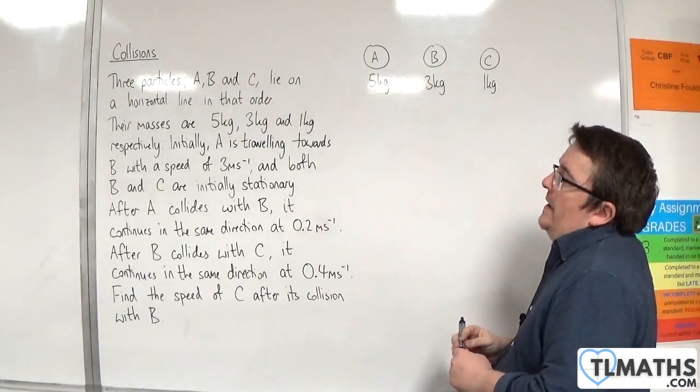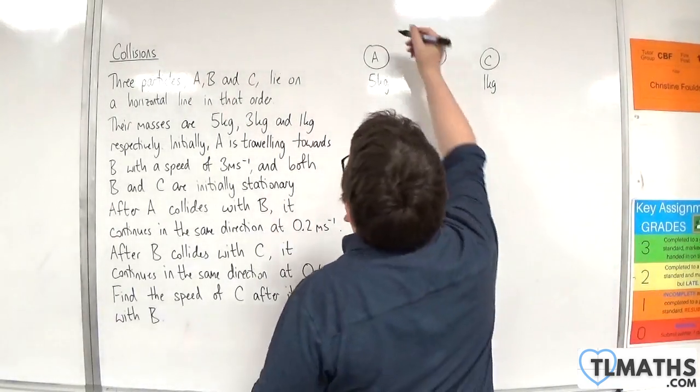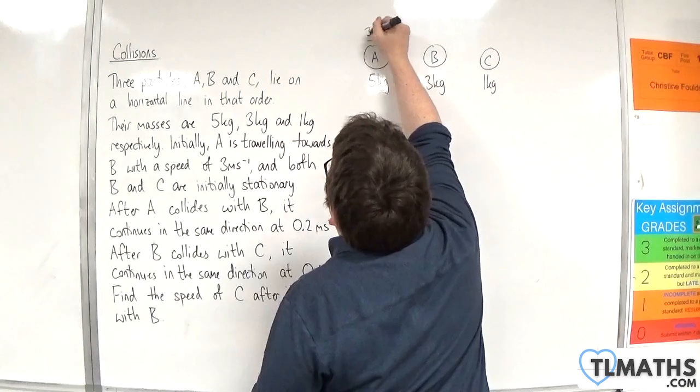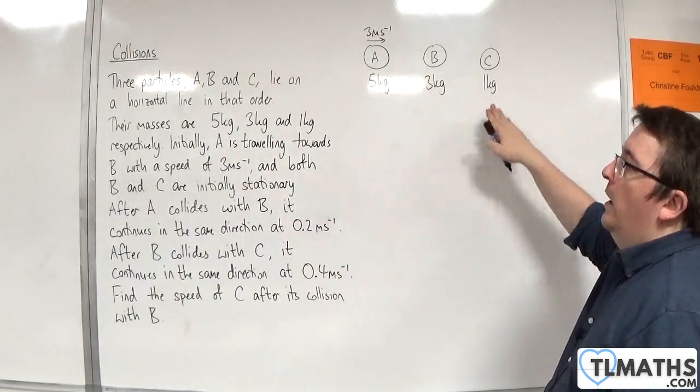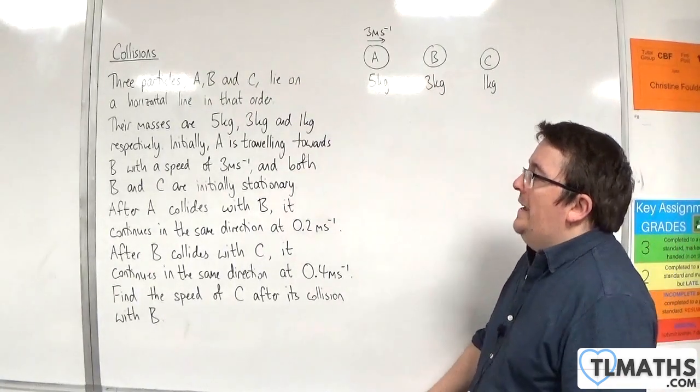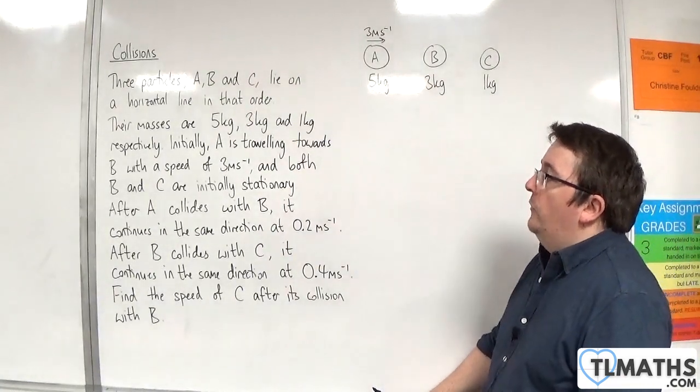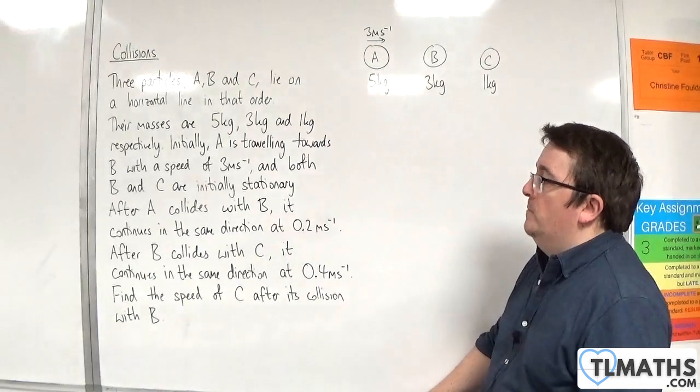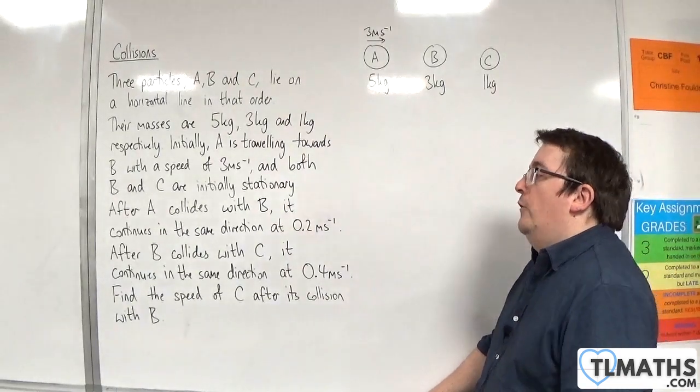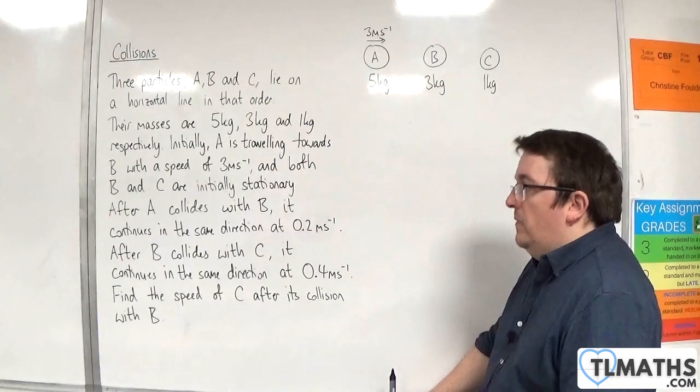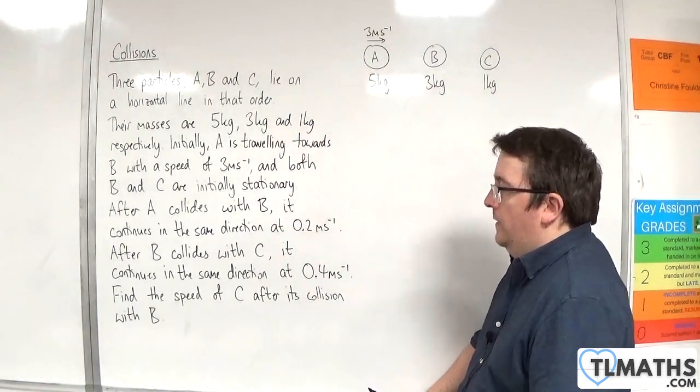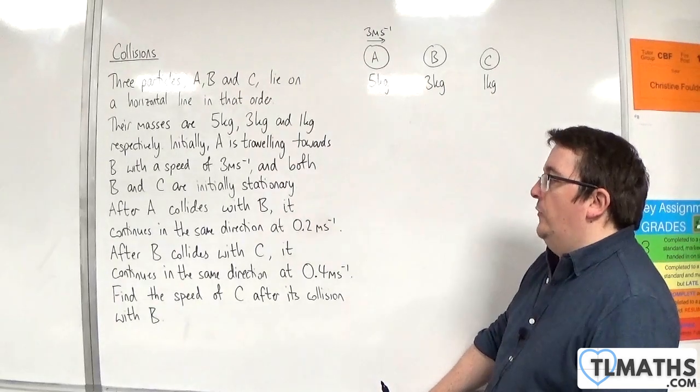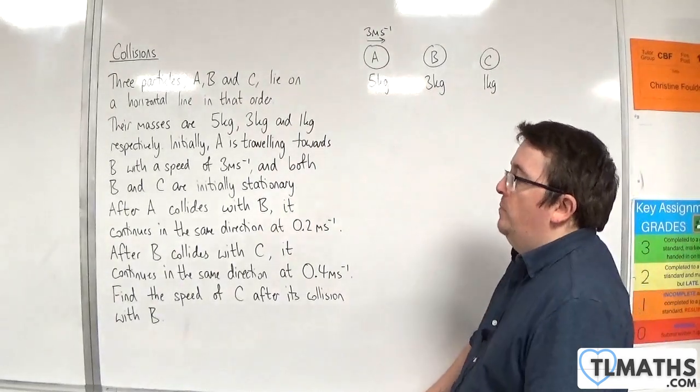Initially, A is traveling towards B with a speed of 3 meters per second, and both B and C are initially stationary. After A collides with B, it continues in the same direction at 0.2 meters per second. After B collides with C, it continues in the same direction at 0.4 meters per second. Find the speed of C after its collision with B.